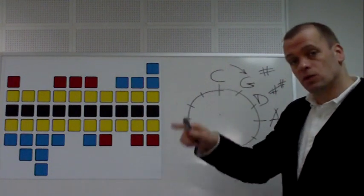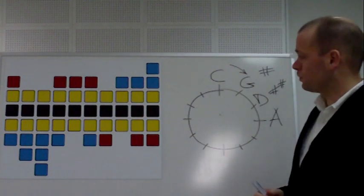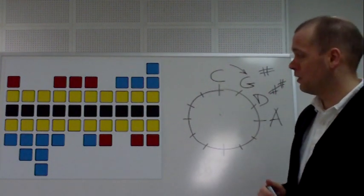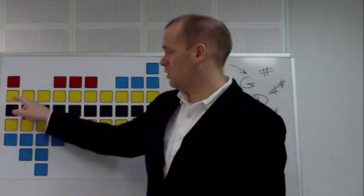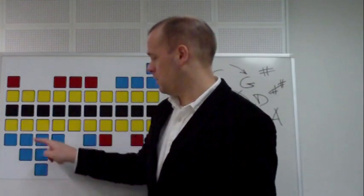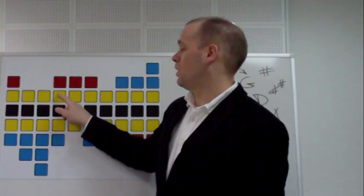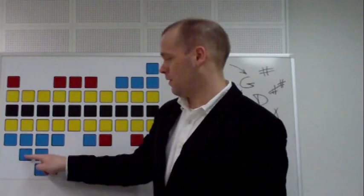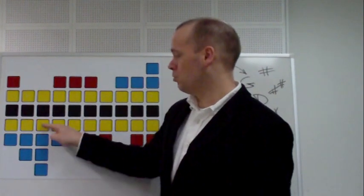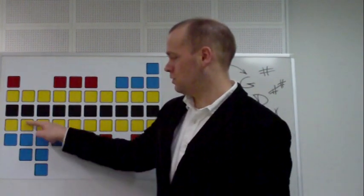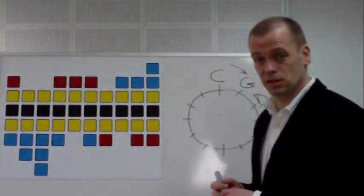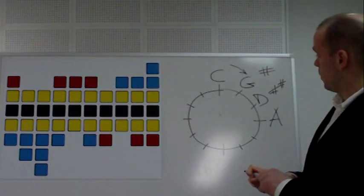If we go counterclockwise, we go down the fifth. So if we have the C scale—C, D, E, F, G, A, B, C—we go down 1, 2, 3, 4, 5. That is C, B, A, G, F. So F is the next if we go counterclockwise.